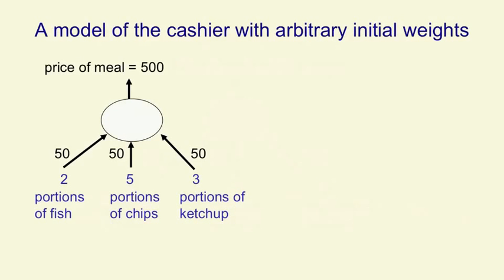Let's suppose that we start with guesses that each portion costs 50. For the meal with two portions of fish, five of chips, and three of ketchup, we're going to initially think that the price should be 500. That gives us a residual error of 350. The residual error is the difference between what the cashier says and what we think the price should be with our current weights.